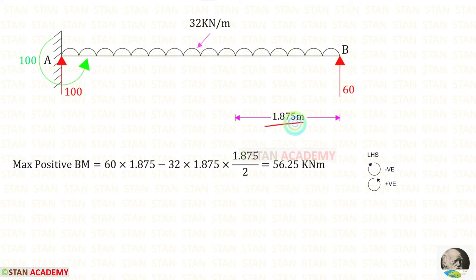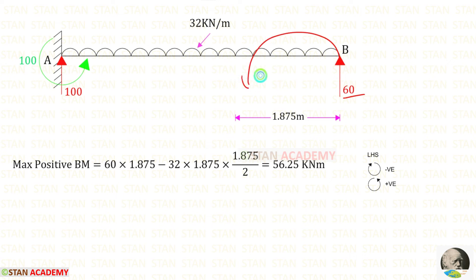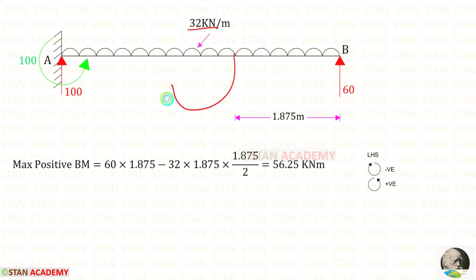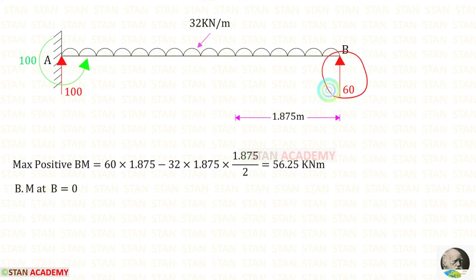At this distance of 1.875 m from B, we have the maximum positive bending moment. Using the left-hand side rule — clockwise negative, anti-clockwise positive — Rb acts anti-clockwise (positive) at distance 1.875 m, and UDL acts clockwise (negative), multiplied by distance and distance/2. Finally, the maximum positive bending moment = 56.25 kNm.